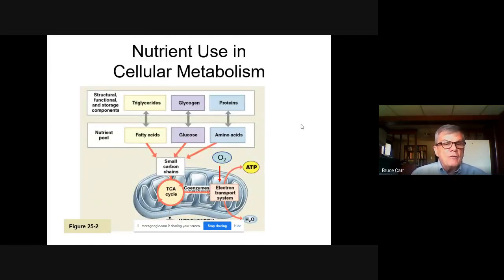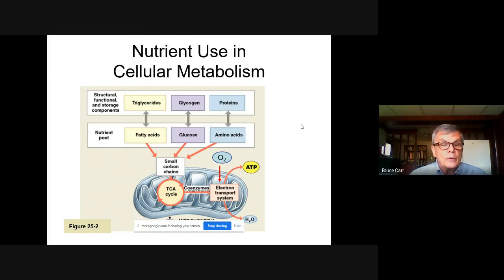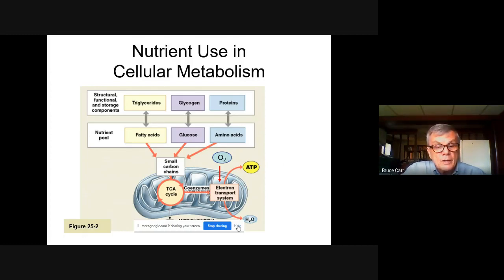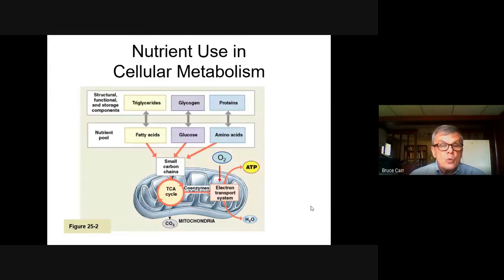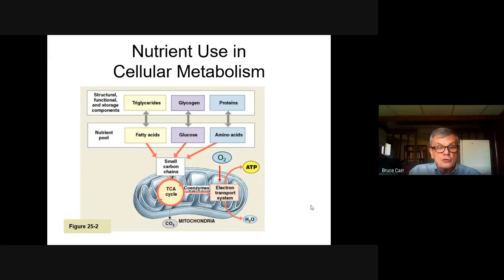The typical form of fats in our body is triglycerides; they contribute fatty acids that can be broken down in the cell and then in the mitochondrion to generate ATP. Glycogen is our principal stored carbohydrate, broken down from the glucose that makes it up. Proteins are made of amino acids. The whole idea is to contribute to that nutrient pool of small carbon chains. The final step — the electron transport chain — consumes oxygen and produces water.